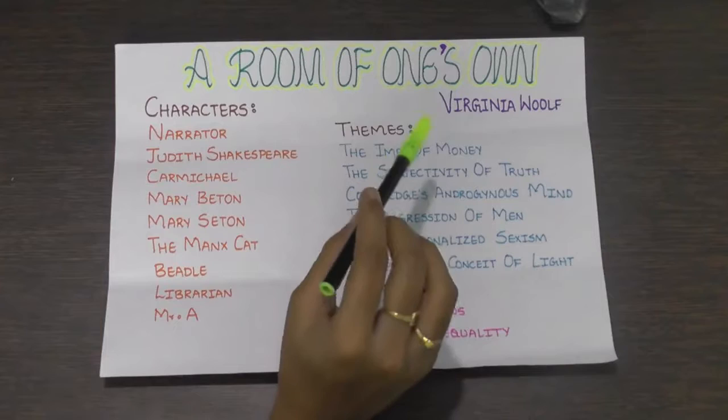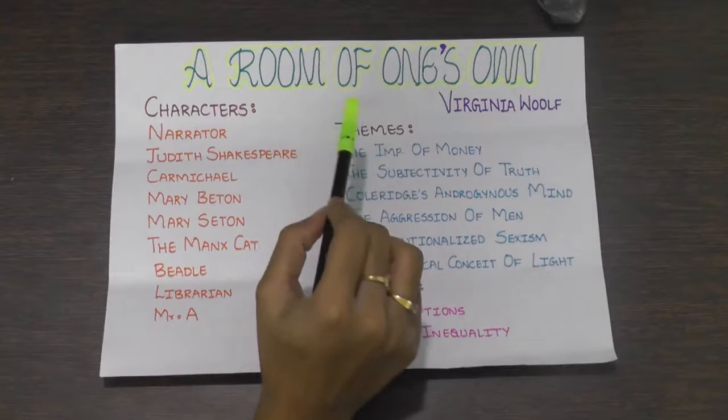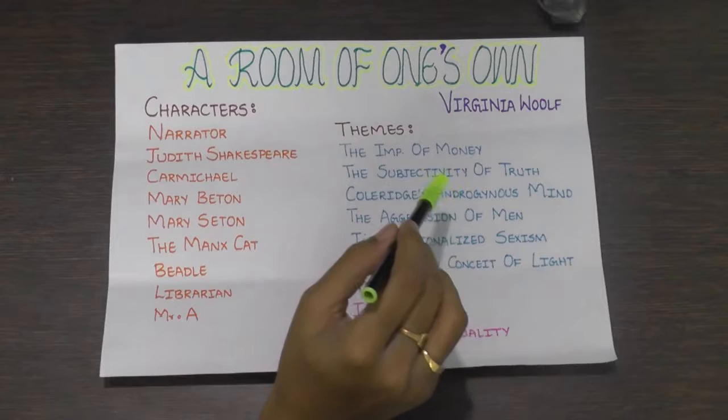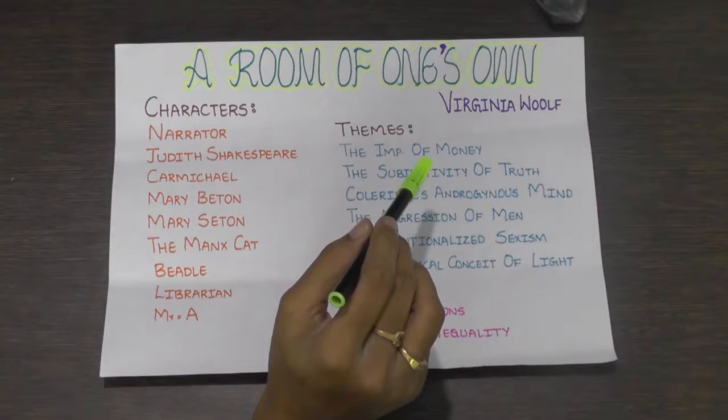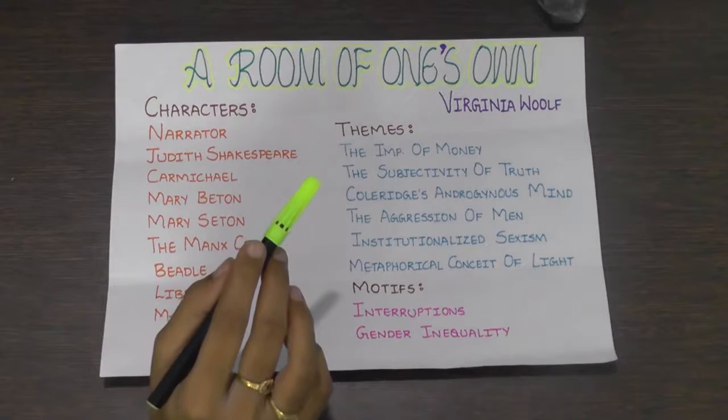Coming to the themes of this work, the first is the importance of money. From the narrator's point of view, lack of financial stability prevents women from having a room of one's own, and thus being assured of monetary independence is of prime importance for meaningful literary output. Since women have traditionally been deprived of financial help, their creativity has been systematically stifled throughout history.